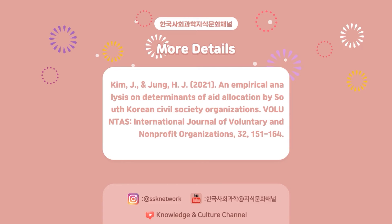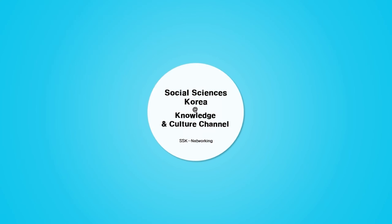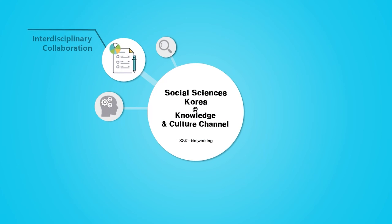For more detailed information, see Kim Jung-Suk, Hee-In, and Joo-Young (2021), 'An Empirical Analysis on Determinants of Aid Allocation by South Korean Civil Society Organizations,' Voluntas: International Journal of Voluntary and Nonprofit Organizations, 32, 151–164. If you enjoyed the video, give a like and subscribe to the channel.